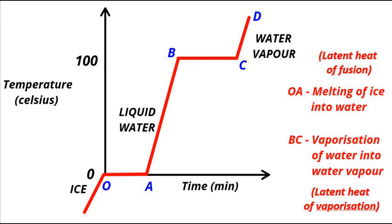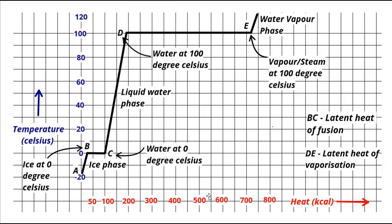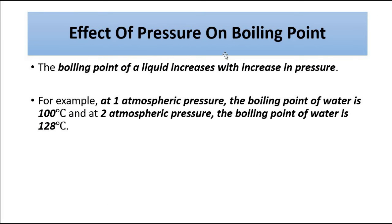On the temperature versus heat plot, the DE portion represents the latent heat of vaporization, which corresponds to the boiling point — 100°C for water — where liquid water and steam coexist in thermal equilibrium. These constant temperature regions represent the melting and boiling points. In summary: the boiling point of a liquid increases with increase in pressure and decreases with decrease in pressure — at 1 atm it is 100°C, at 2 atm it is 128°C for water.